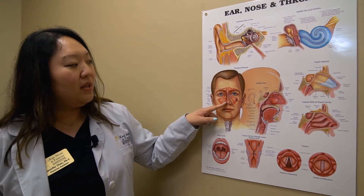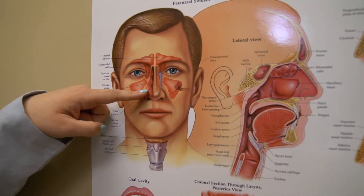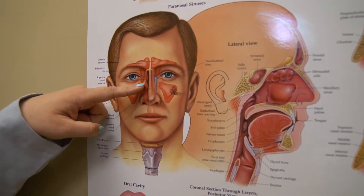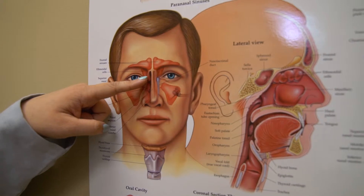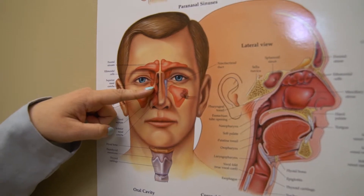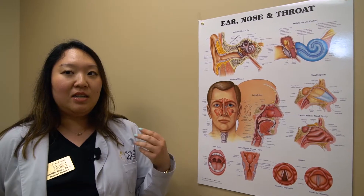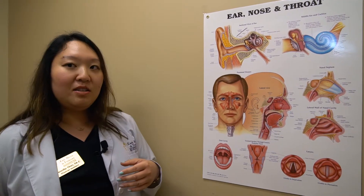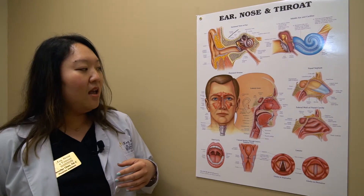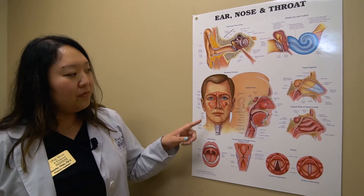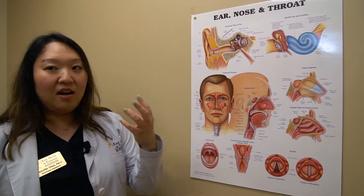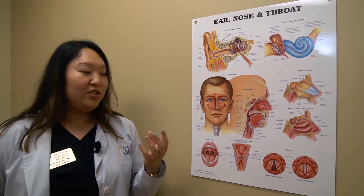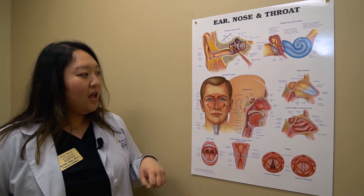Here we have the different turbinates, which are kind of like pillows on the outside of the nose. They swell up and increase and decrease in size based on the allergies somebody has, so that can cause a lot of the congestion symptoms.